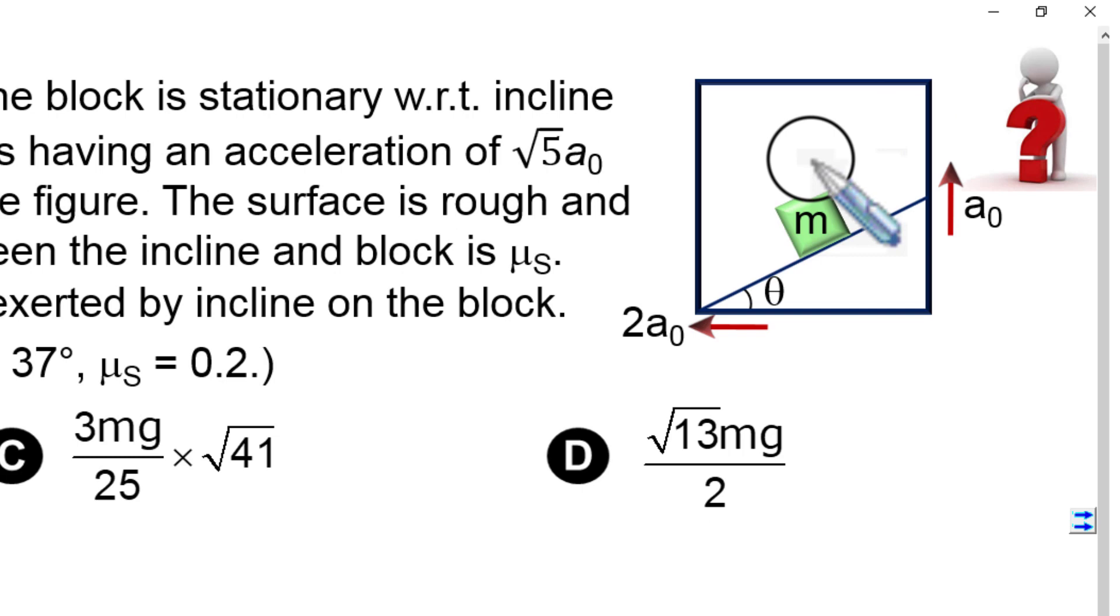Let us assume this contact force is F vector because we do not know the magnitude as well as direction. If we consider other forces acting on the block, this is only the weight that will act in the downward direction, mg. Let us consider the x-axis in the upward direction. We can express these accelerations as well as weight in vector form. We can write a₀ with the symbol j cap, and 2a₀ should be multiplied with -i cap because this is moving in the negative x direction, and this weight is acting in the downward direction, so this is -j cap.